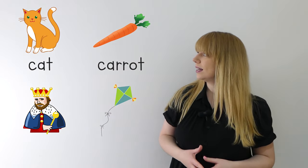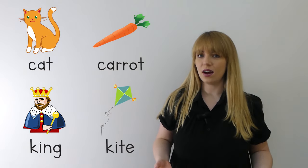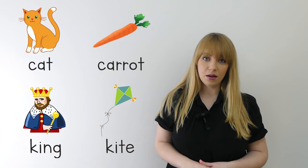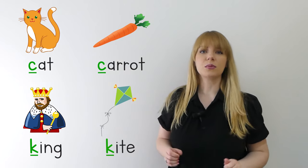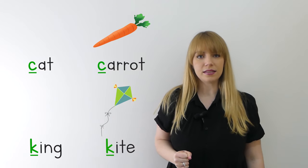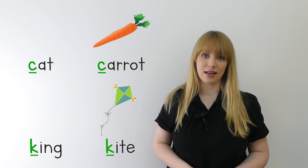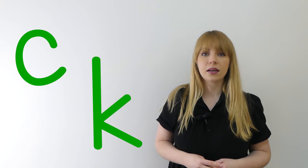That's right, we have cat, carrot, king and kite. All of these words start with the same sound. Do you know what sound they all start with? That's right, they all start with a k sound. But there's something a bit different about this sound because there are different letters that make this sound. We have a curly c and a kicking k, but they both make the sound.